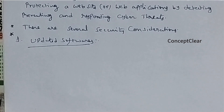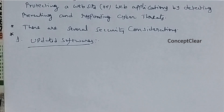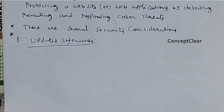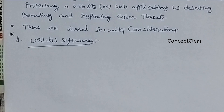For example, when you join any course or training class, the instructor will ask you to update your system and install the software requirements. You need to meet the minimum requirements. Similarly here, you need to always update your software. For example, once you join an office, if you want to access some office websites on your mobile or computer, they will ask you to update your software from time to time. That is called updated software.